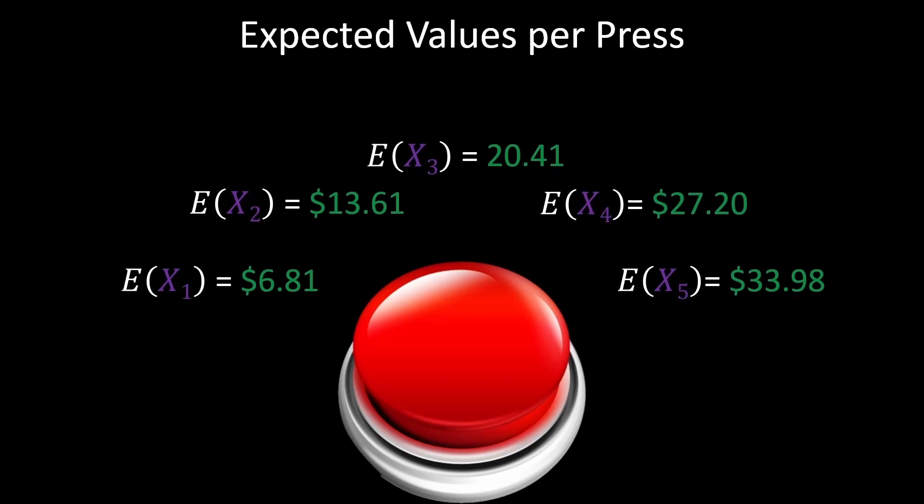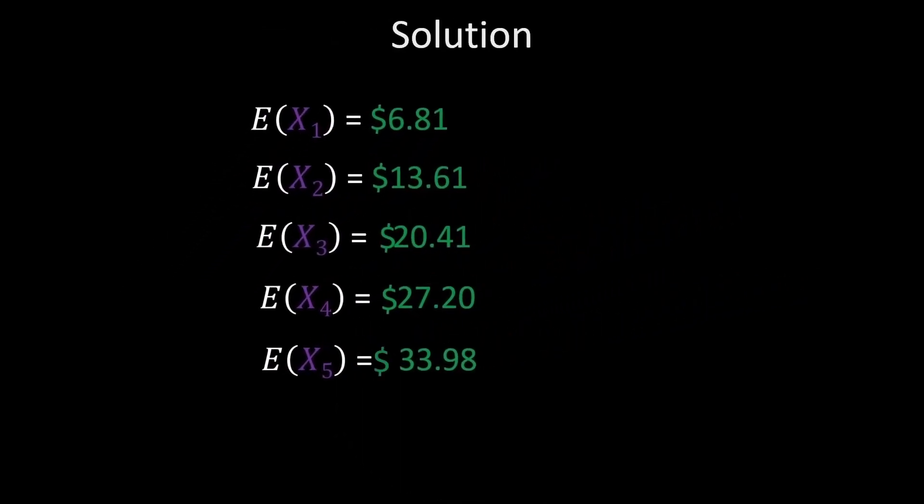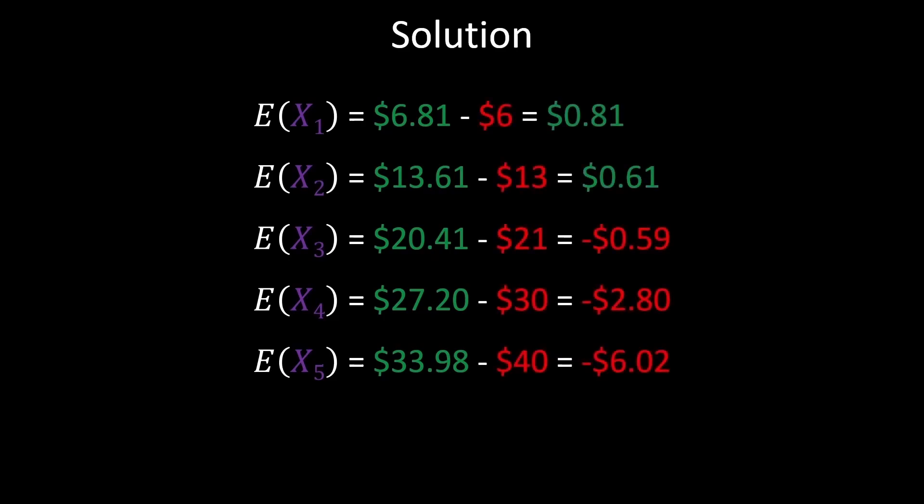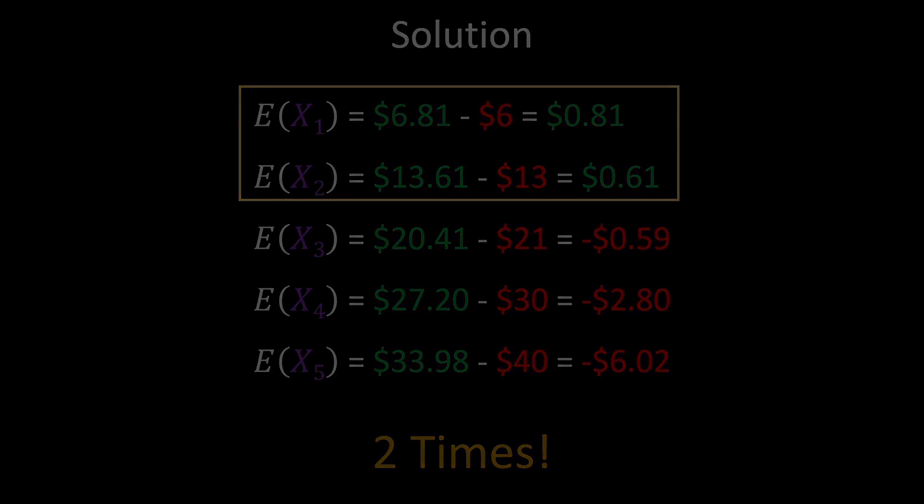Now that we have all five expected values, we can finally compare them to what it would cost to play up to that point. And we see that if you press the button more than two times, you're actually expected to lose money. So if you want to make money playing this game, it's in your best interest that you only press the button twice. And that's the math behind it.